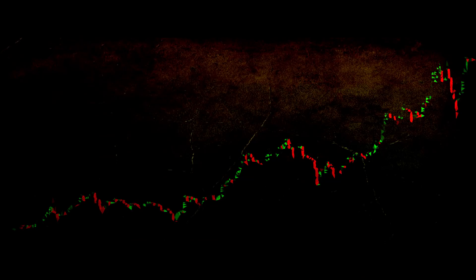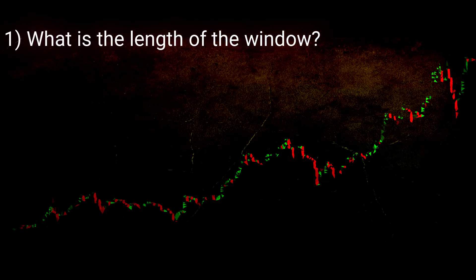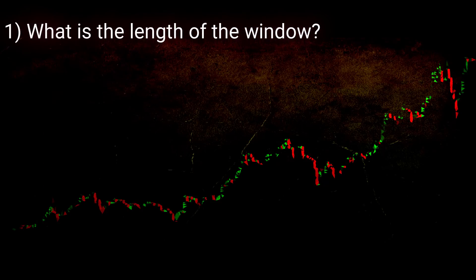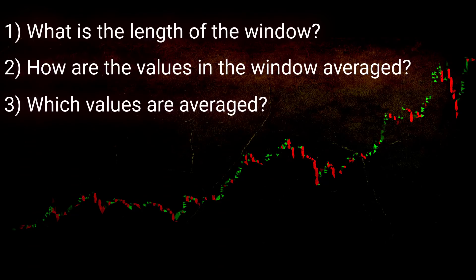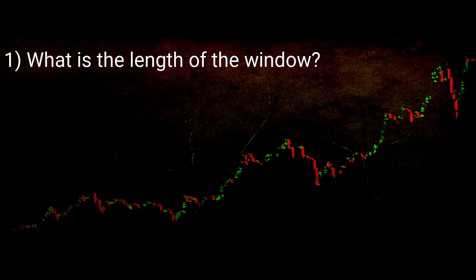We are going to discuss the three things you need to know to understand moving averages. Number one is the length of the window. Number two is how the values in the window are averaged. And number three is which values in the window are averaged. When we look at which values are averaged, we will also consider how this summarizes the trade history. Let's jump over to GDEX and get into the details.